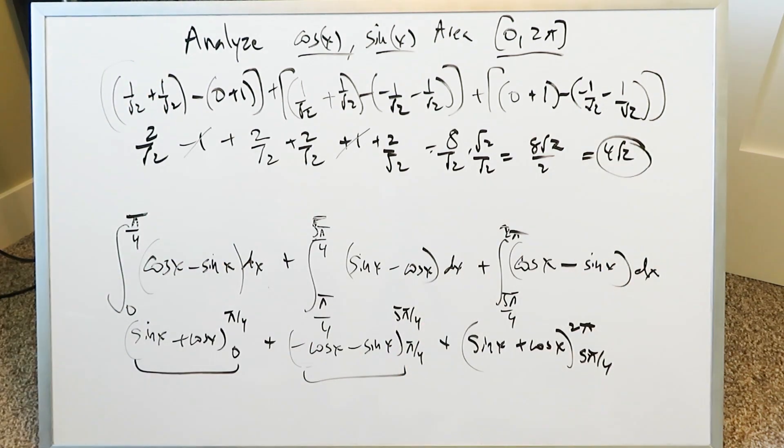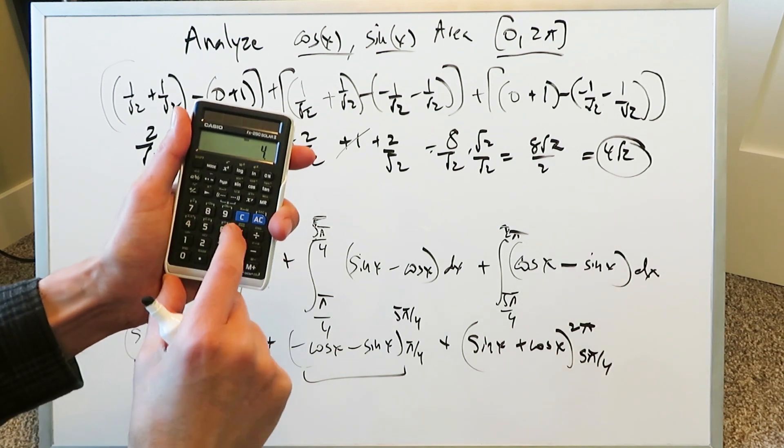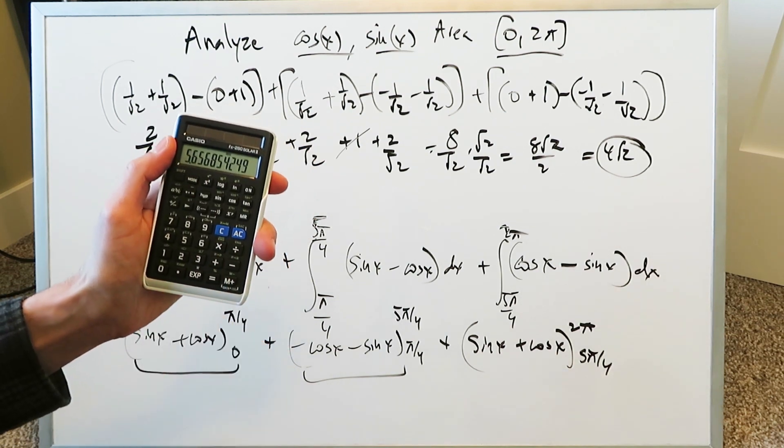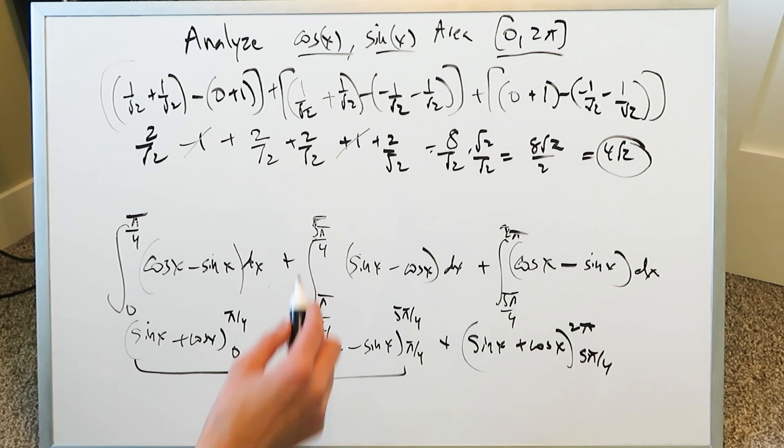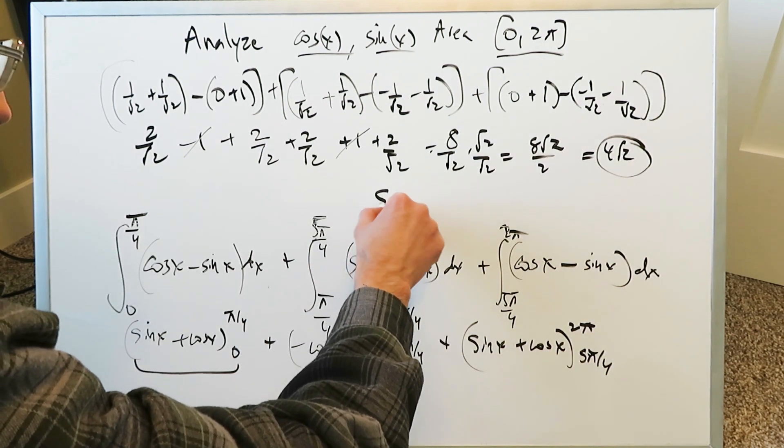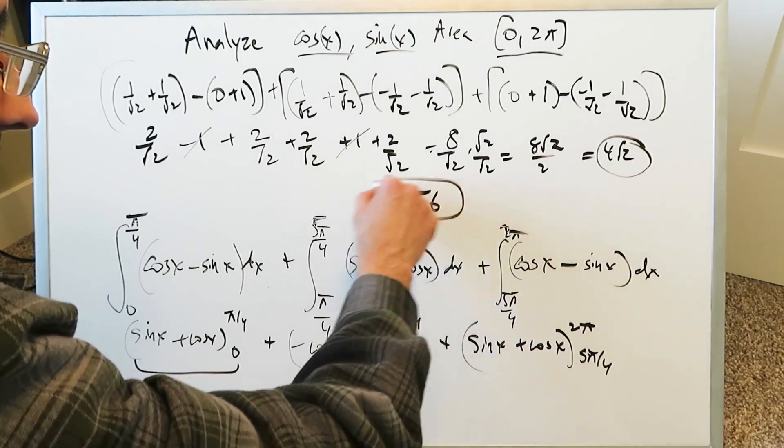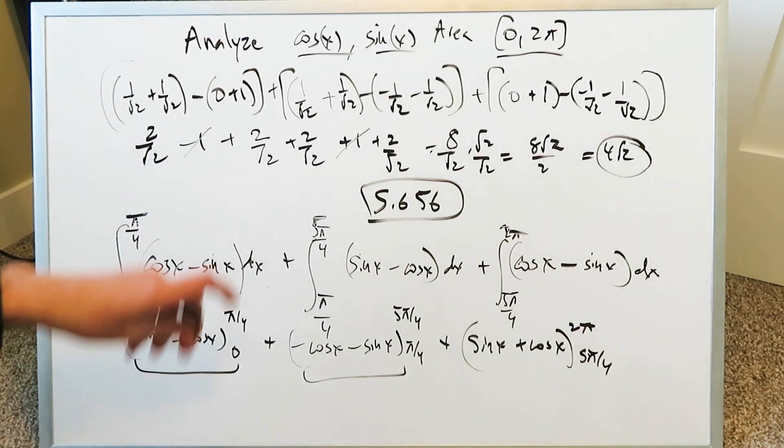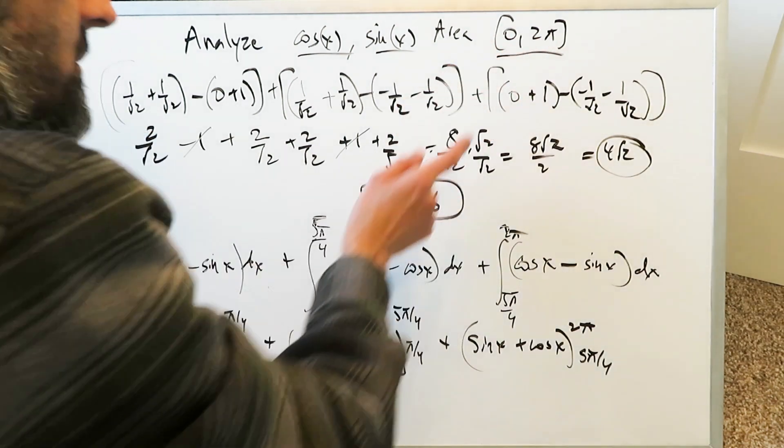That represents the cumulative area for everything depicted in the graph. 4√2 = 5.656, which represents the area between these two curves, depending on what was on top and bottom based on the intersection points, from the domain 0 to 2π.